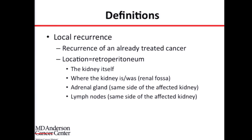The location for a local recurrence is an area of the body called the retroperitoneum — where the kidney lives, deep in the back area, surrounded by intestines, liver on the right side, and the pancreas, spleen, and intestines on the left. It's a tricky area to return to for another surgery because of the scarring from the initial operation or ablation. This could include the kidney itself in patients who had a partial nephrectomy or ablation, where the kidney is still present with a new tumor.